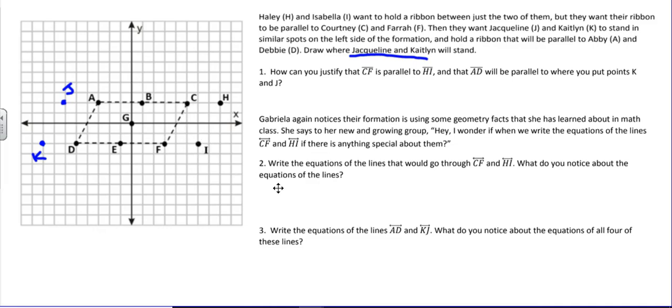Gabriella notices that her formation is using some geometry facts that she's learned about in math class. She says to her new and growing group, hey, I wonder if when we write the equations of the lines CF and HI if there's anything special about them. So let's write the equations of the lines that would pass through CF and then also line HI, and what do we notice about the equations of those lines?